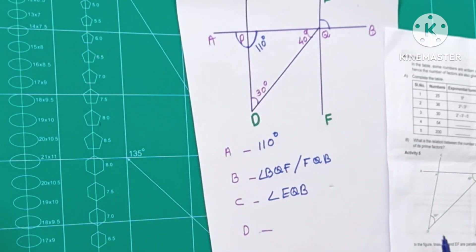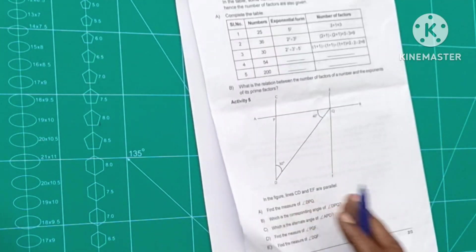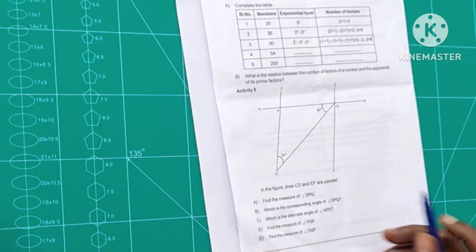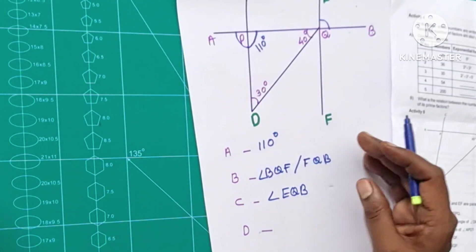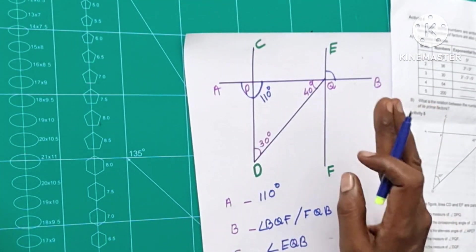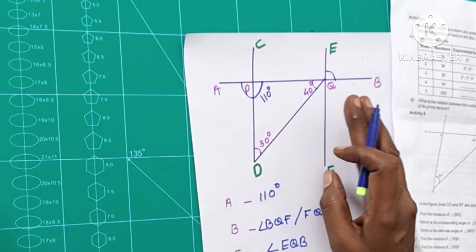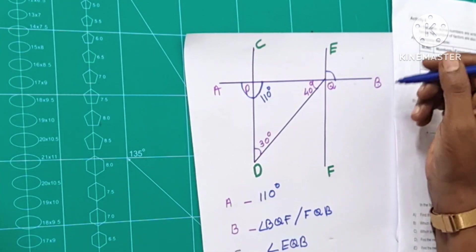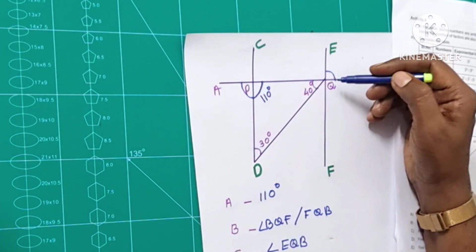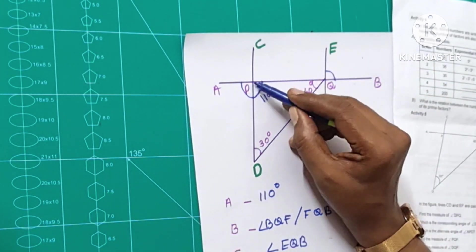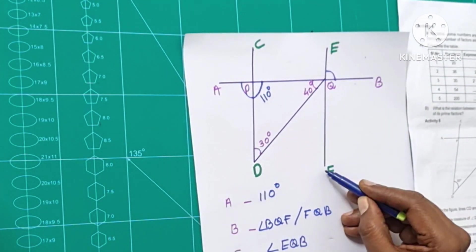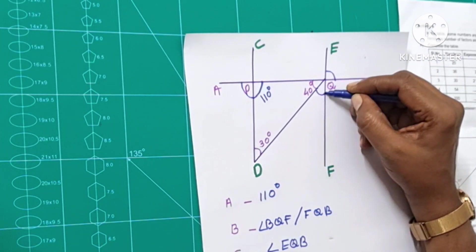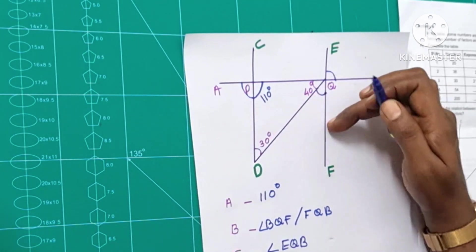Let's take a look at the angle. This is D. Find the measure of angle PQF. If you want to use the angle, that's what we need to do. The answer is here. What is PQF? Look, what is P-Q-F?